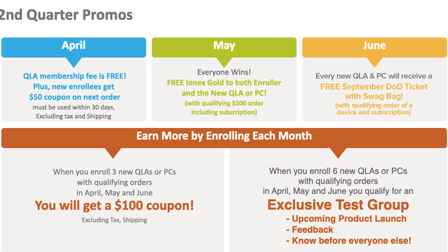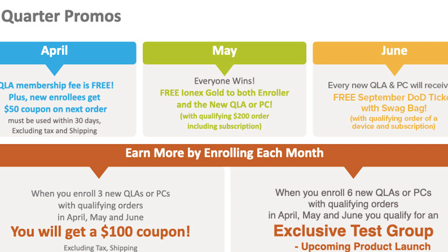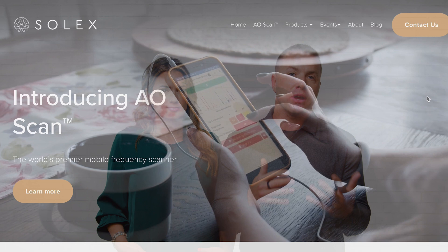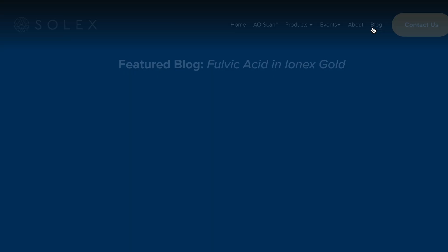It is May, so we have a May incentive we don't want you to forget about — everybody wins. This is everybody wins gold: the new enrollee and the enroller. Everybody's going to get gold with a qualifying order. A qualifying order is a subtotal that reaches $200 or more, and you get this $50 value in product sent to you.